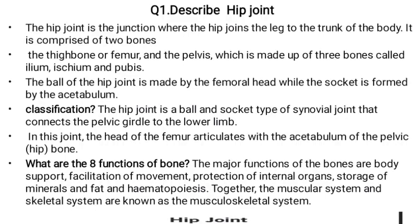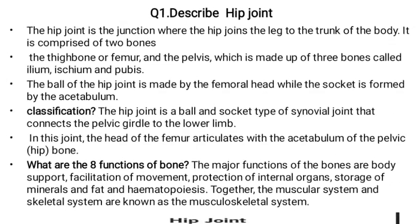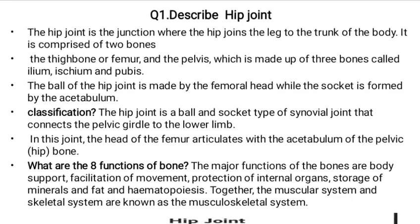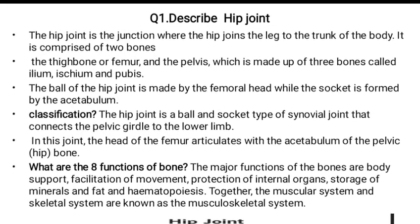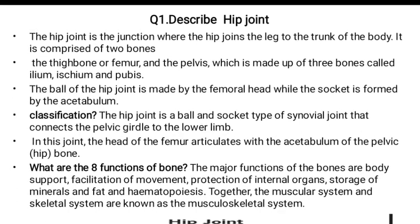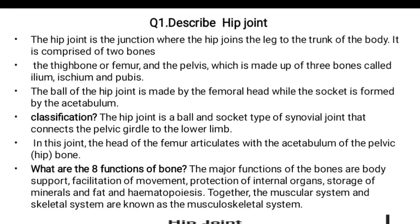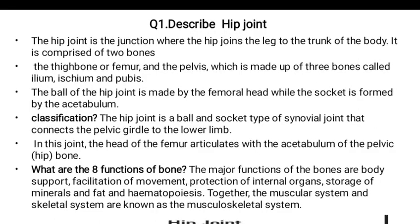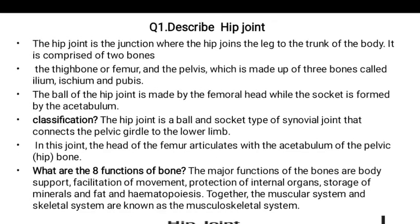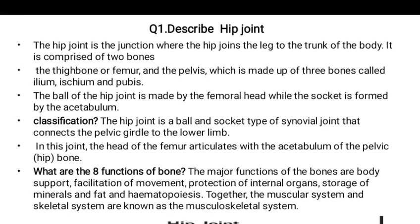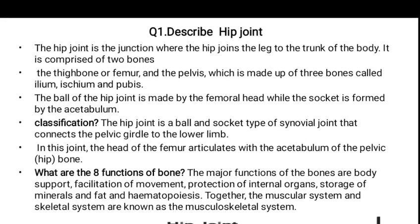Question number one: describe the hip joint. The hip joint is the junction where the hip joins the leg to the trunk of the body. It is comprised of two bones: the thigh bone or femur, and the pelvis, which is made up of three bones called the ilium, ischium, and pubis. The ball of the hip joint is made by the femoral head.